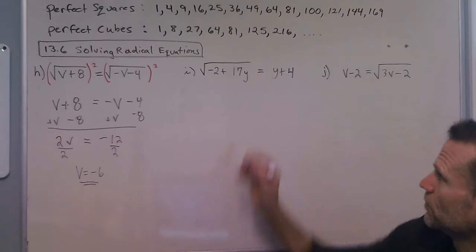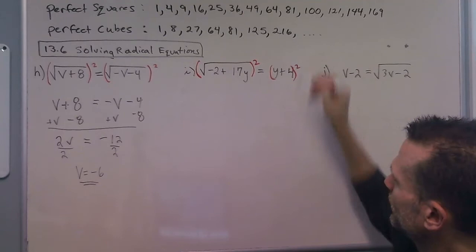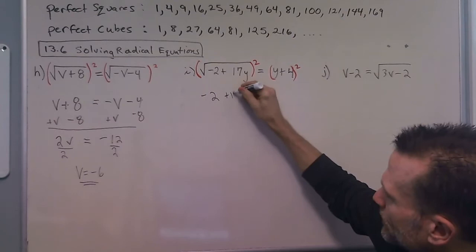So moving on to i here, I'm going to square this side and square this side. The left side's quite easy here, just have negative 2 plus 17y.